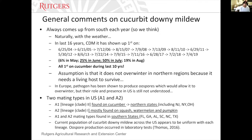I'm going to switch now to cucurbit downy mildew. As many of you know, downy mildew of cucurbits has become a significant problem throughout the United States since 2004. Traditionally, it's thought to be brought up on weather patterns from southern areas. Looking at first reports in New Jersey over the past 16 years — 6% of the time it's been detected in May, 25% of the time first detected in June, 50% in July, and 19% as late as August. So 75% of the time it's most likely going to show up sometime in June or July.